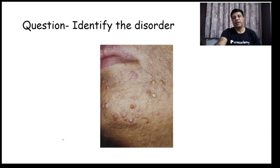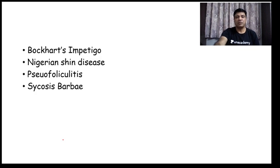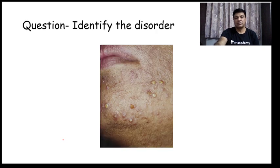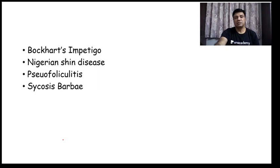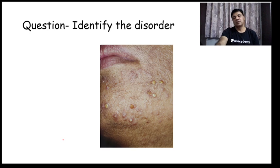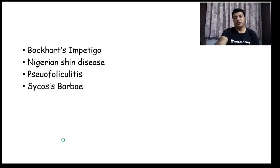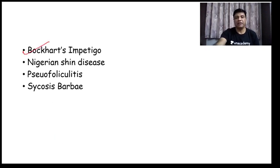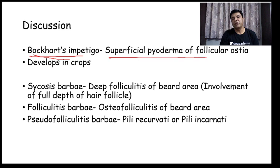Next question: identify the disorder. Choices are Bockhart's impetigo, Nigerian shin disease, pseudofolliculitis, and sycosis barbae. The correct answer is this is a patient of Bockhart's impetigo — folliculitis of the beard area. Bockhart's impetigo is the name given to superficial pyoderma follicular ostia and develops in crops.